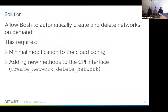The solution requires adding new methods to the CPI that didn't exist before — for example, create-network, which goes to the IaaS (in vSphere's case, NSX-T) and creates routers and switches based on the configuration provided. Same thing for delete-network. This also required changes in BOSH itself so it can call these new CPI methods and keep track of the state of networks, list them, and so on. This was a major contribution requiring changes to the CPI, BOSH, and the BOSH CLI.